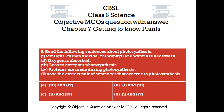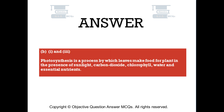Option A: 3 and 4. Option B: 1 and 3. Option C: 2 and 4. Option D: 1 and 4. The right answer is Option B: 1 and 3. Photosynthesis is a process by which leaves make food for the plant in the presence of sunlight, carbon dioxide, chlorophyll, water, and essential nutrients.